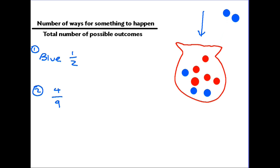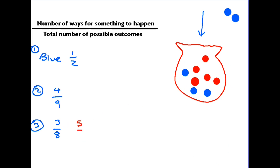Let's do it again — the second time we did get blue again. So the third time we go in, there are only 3 blue ones left out of a total of 8 counters, so the probability is now 3 eighths. Now think about the probability of getting a red one right now — there are 5 red ones out of the total of 8, so the probability of getting a red one is 5 out of 8. If we then take a red one out, the probability of getting a blue is 3 out of 7, and red is 4 out of 7.